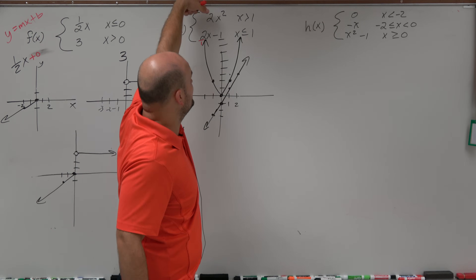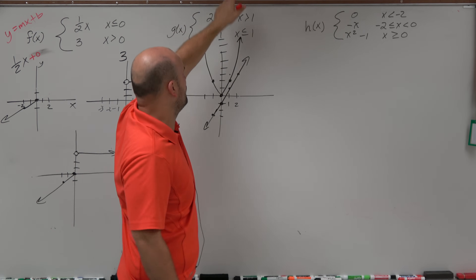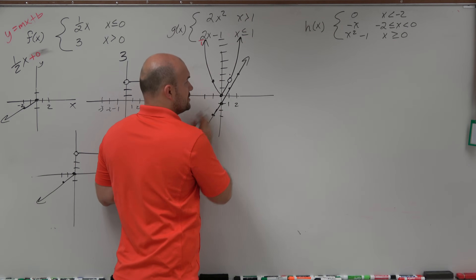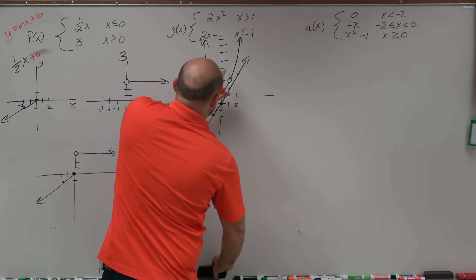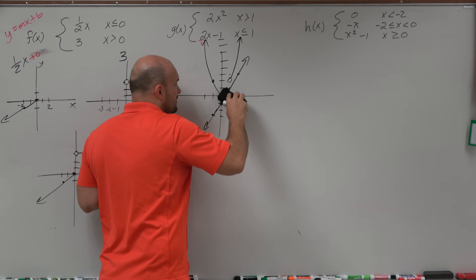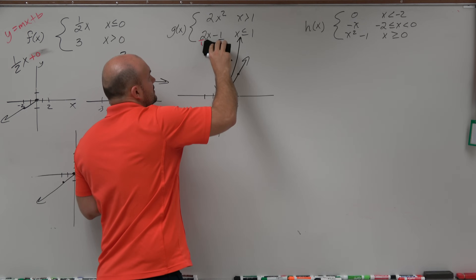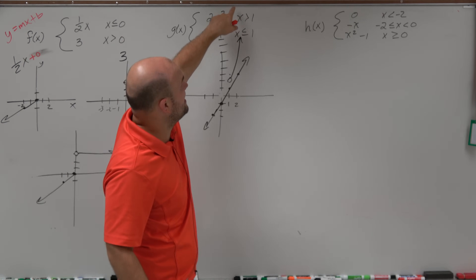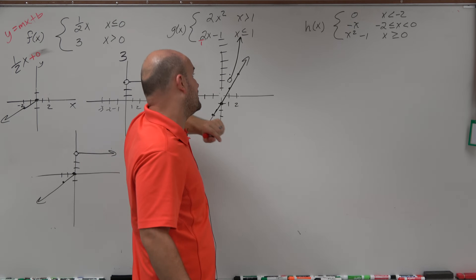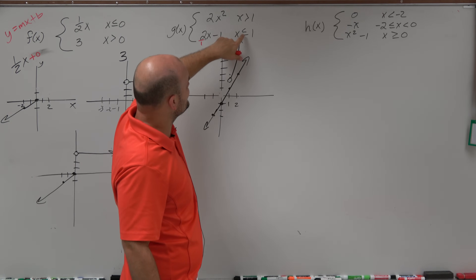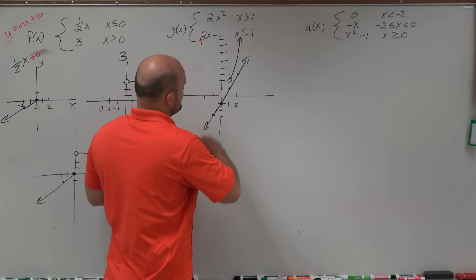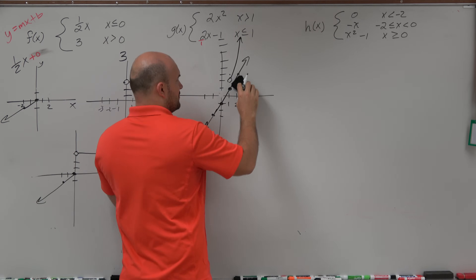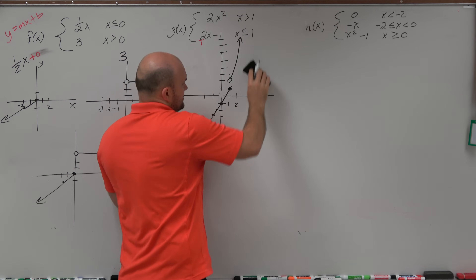This is saying you're only going to use 2x squared when x is greater than 1. It's greater than — not greater than or equal to — so we're going to use an open circle and go to the right. That means all the rest of this graph I just drew is not part of the piecewise function. The other condition is x less than or equal to 1, so that's going to be a closed circle, and then everything going left of 1. The rest we just erase.